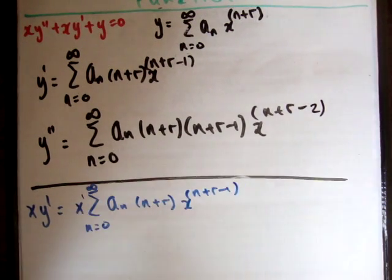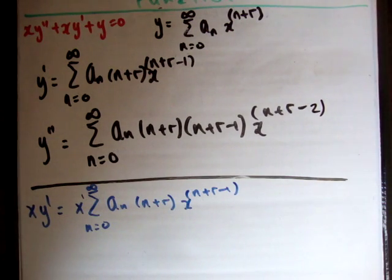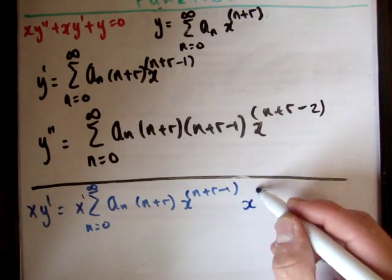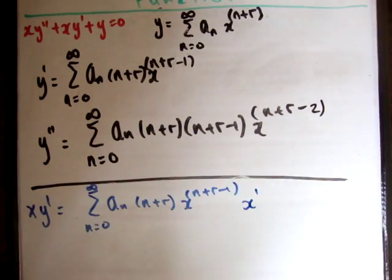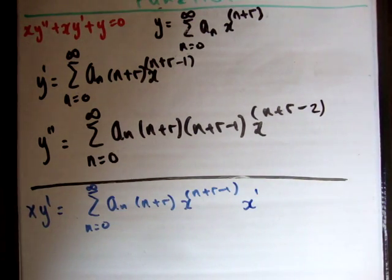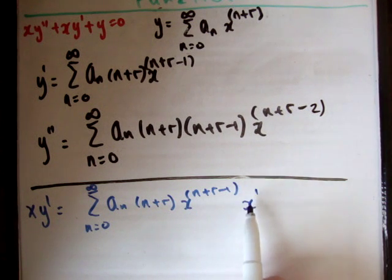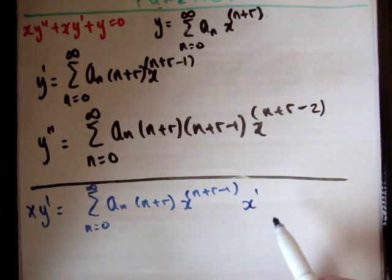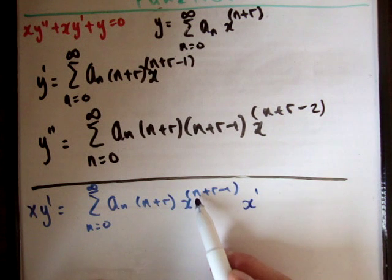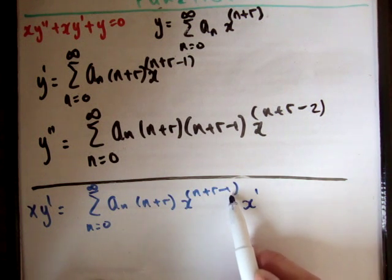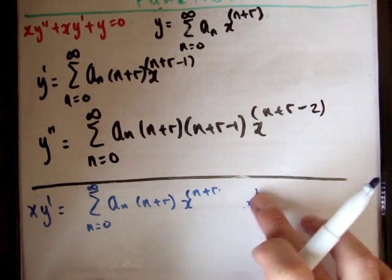And of course you know that x is just equal to x to the 1. So we can bring that x to the 1 inside and write it there. And we should know at this stage that if you multiply powers then it's the same as adding. If you're multiplying two things with different powers then it's the same as adding the powers. So in this case I'm adding n plus r minus 1 and 1 and that basically just gives us n plus r.